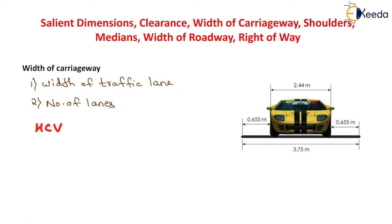The width of traffic lane should be such that there is sufficient lateral clearance on either side of the moving vehicle. If a vehicle is moving on a particular road it should have sufficient clearance distance on either side. The lateral clearance required is higher for higher operating speeds. Considering all these factors, a width of 3.5 meter per lane is generally provided on rural highways in India if the pavement has two or more lanes.